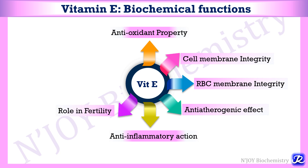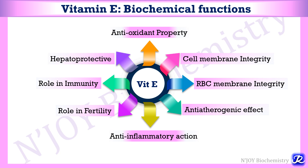Regarding its role in infertility: vitamin E preserves and maintains the germinal epithelium of gonads and is hence essential for normal reproduction. Decreased levels of vitamin E are associated with infertility. In terms of immunity, vitamin E improves cellular immunity and has a hepatoprotective role — it protects the liver from damage by toxic compounds like carbon tetrachloride.